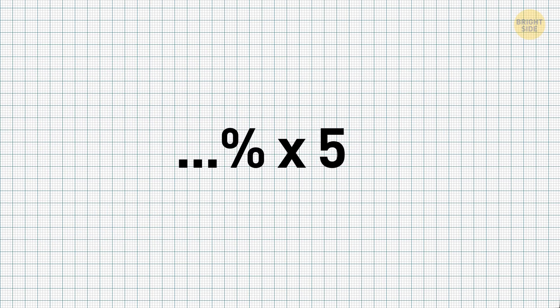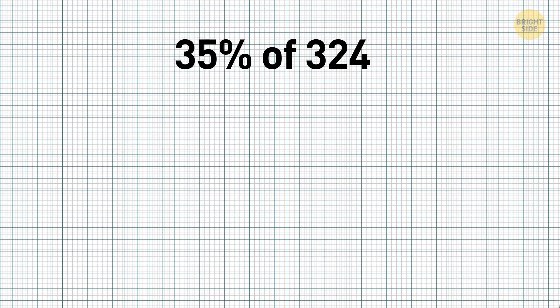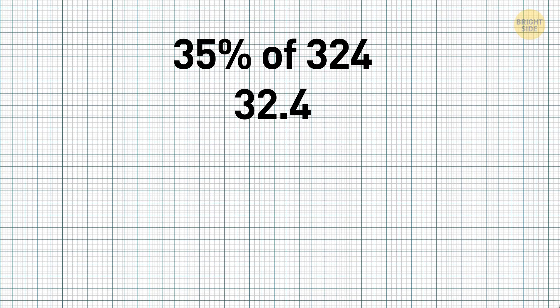Finding any percentage that's a multiplier of 5 can be done in a more or less similar way. Let's take 35% of 324 as another example. Again, move the decimal point left by one place, getting 32.4. Now, you need to do two different actions with this number. First, multiply it by 3, which will get you 97.2.